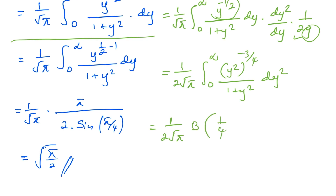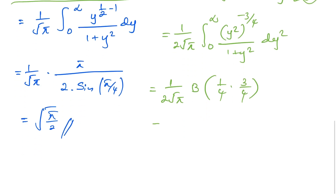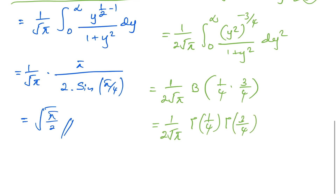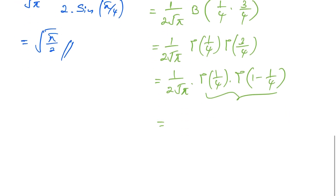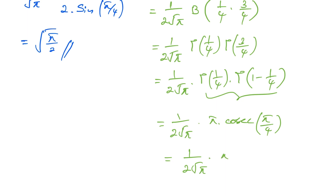We represent the Beta function using Gamma functions: Γ(1/4) · Γ(3/4), which gives 1 over (2 square root of π) times Γ(1/4) · Γ(1 − 1/4). Applying Euler's reflection formula, Γ(x)·Γ(1−x) = π/sin(πx), we get 1 over (2 square root of π) times π over cos(π/4). Since cos(π/4) = 1/√2, simplifying gives square root of π over 2. We are done! If you like this type of video, please subscribe to this channel. Thank you for watching.